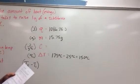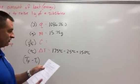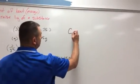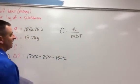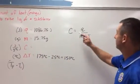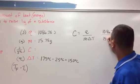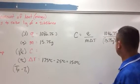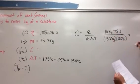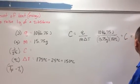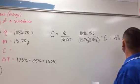It says calculate the specific heat of iron, so I'm looking for my specific heat C. The formula is C equals Q over M delta T — just plug and chug. Q is 1,086.75 joules divided by my mass of 15.75 grams times my delta T of 150 degrees Celsius. That gives you C equal to 0.46 joules per gram degree Celsius.